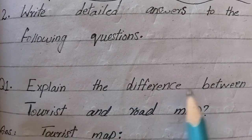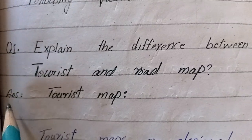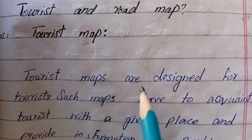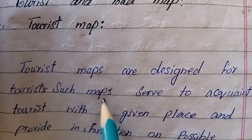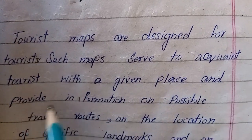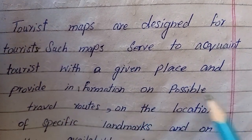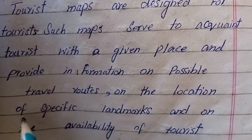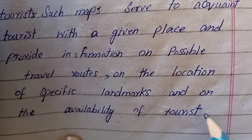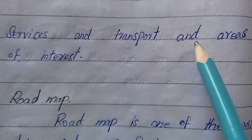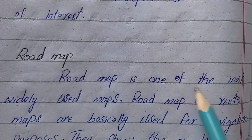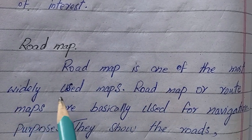Explain the difference between tourist and road map. Answer — Tourist map: tourist maps are designed for tourists. Such maps serve to acquaint tourists with a given place and provide information on possible travel routes, the location of specific landmarks and services, transport, and areas of interest.